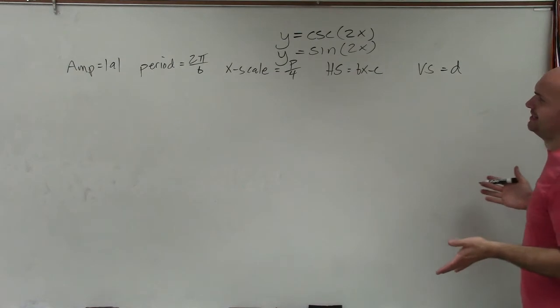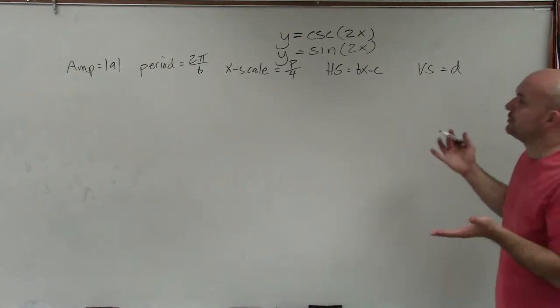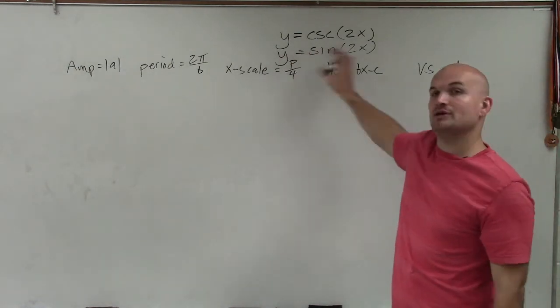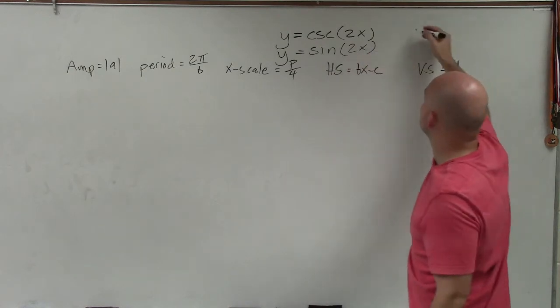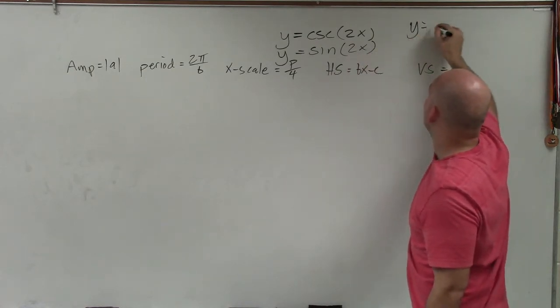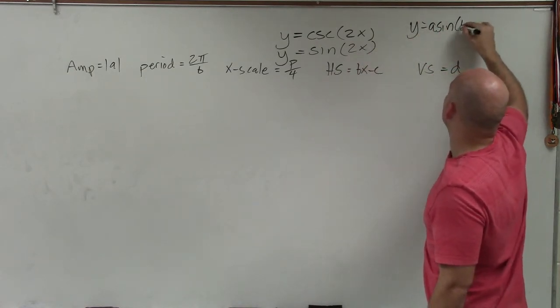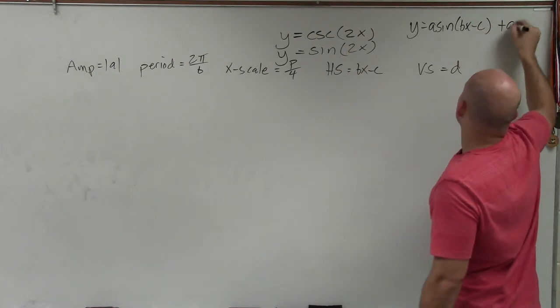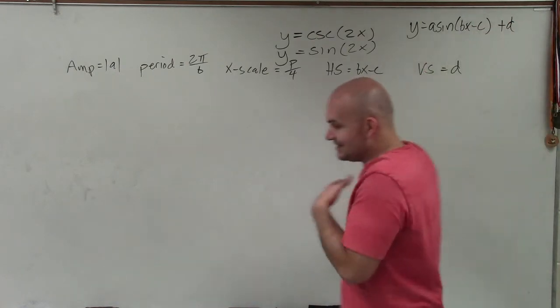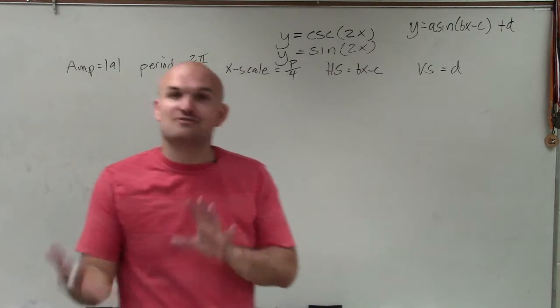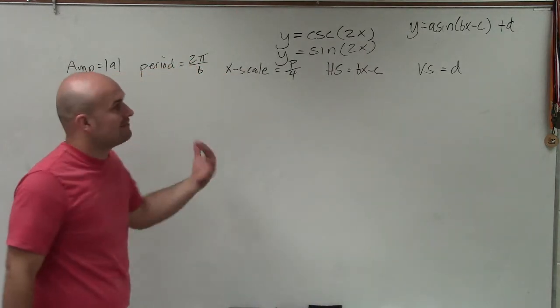And you might say, all right, where is the bx and the d and all this kind of so forth? Well, when we look at our standard form of here's my sine function, the standard form that we have is y equals a times sine of bx minus c plus d, where a, b, c, and d are all going to transform our graph when we have values.